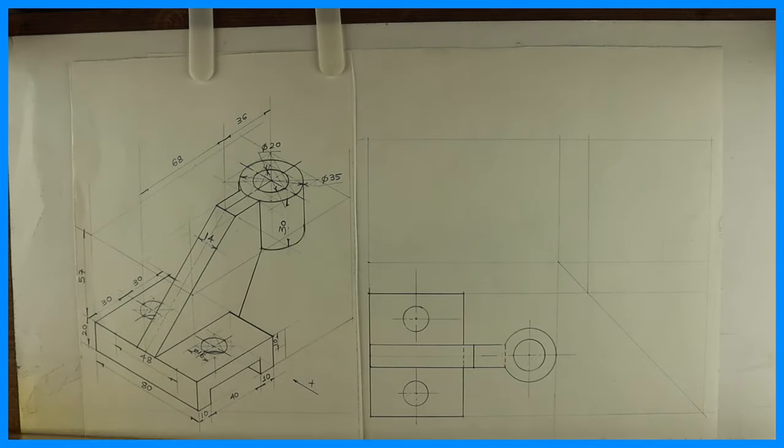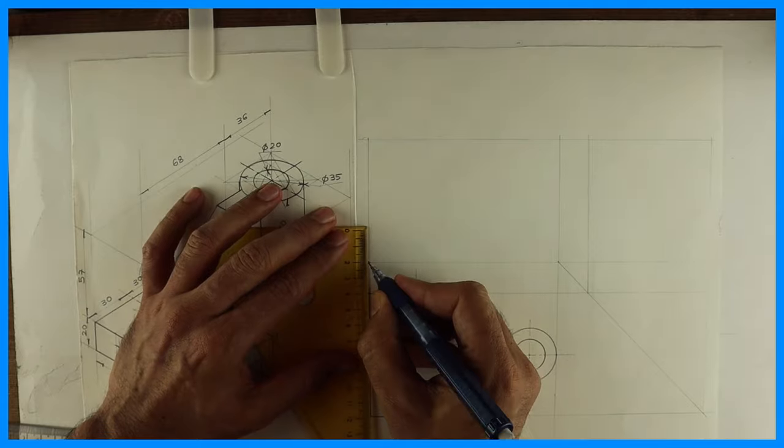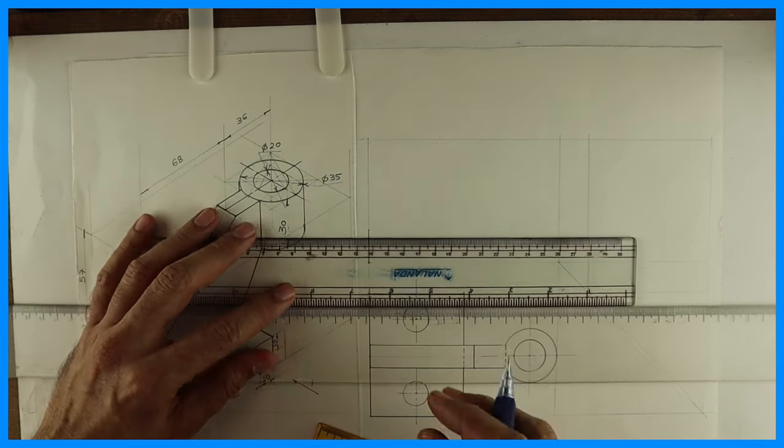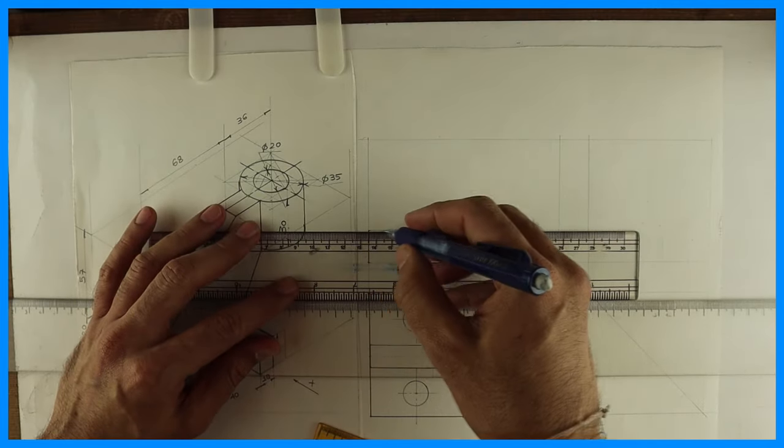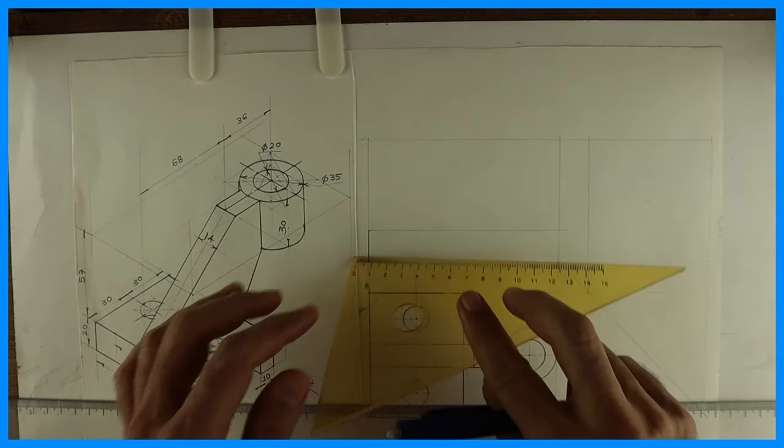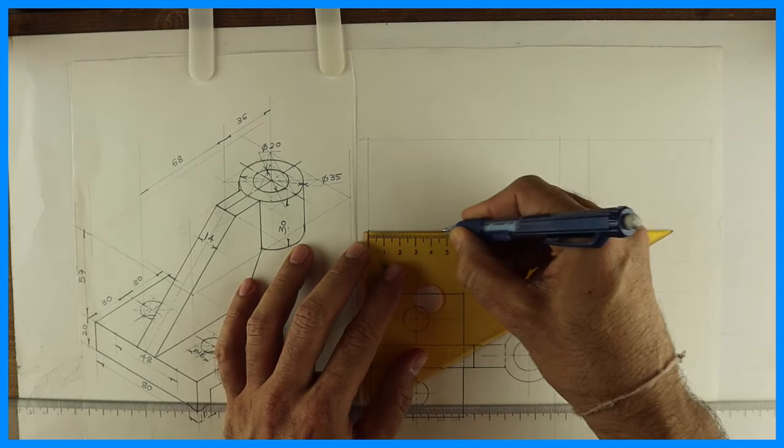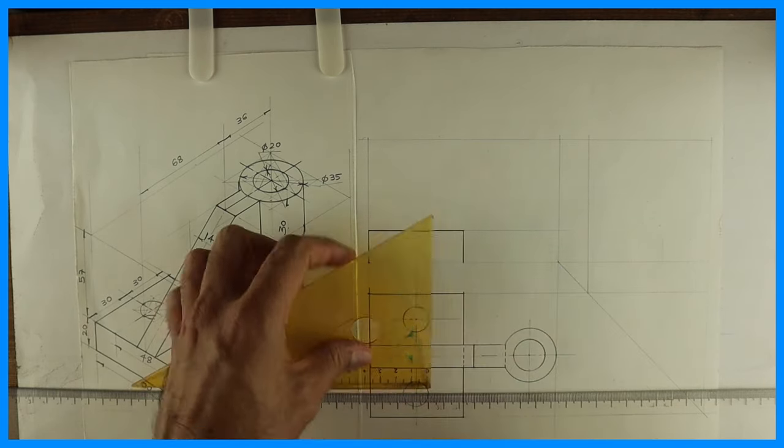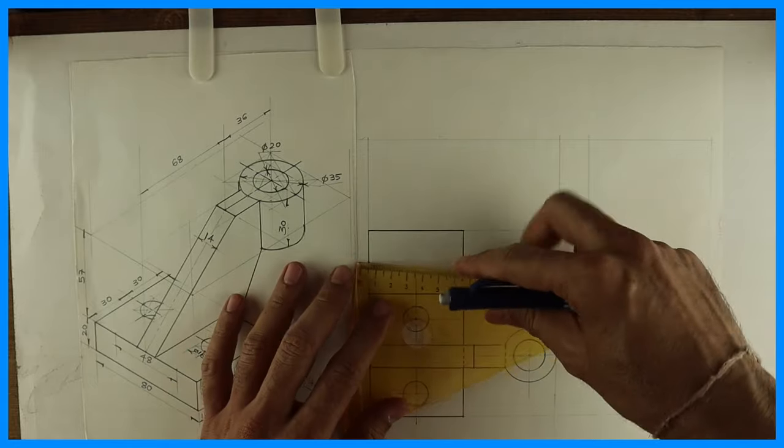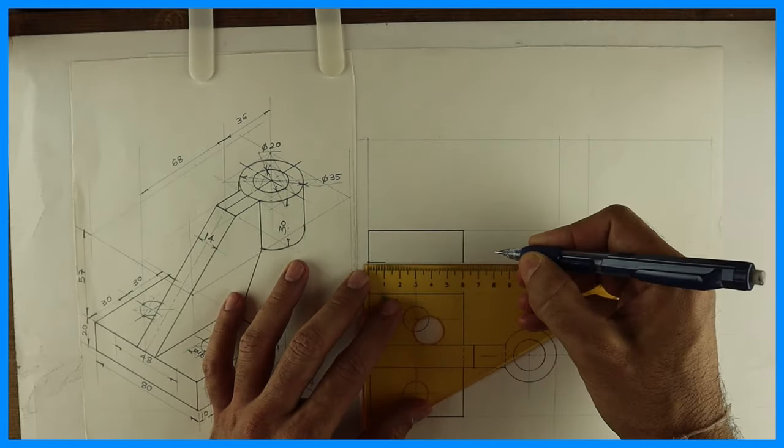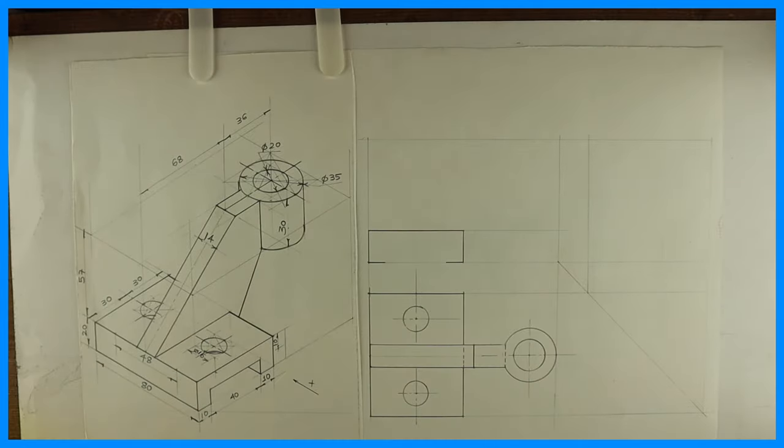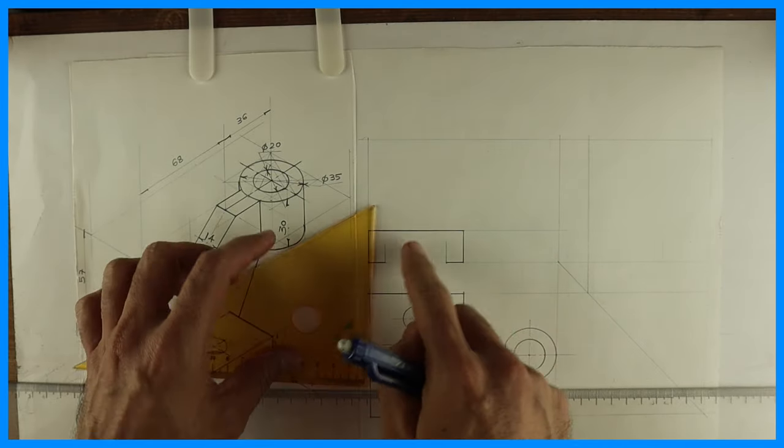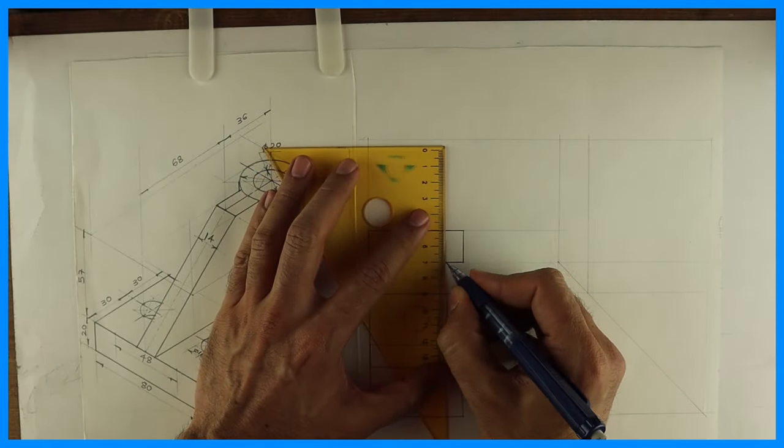After that we'll draw this part. See in front view this height is 20. So we are drawing lower block in front view, 20 by 60. This is 10, 40, 10. This height is 10.